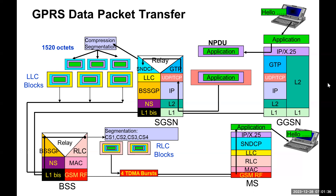NPDUs will be addressed to a particular IMSI or IP address. These NPDUs will be passed over to GTP, which will add a GTP header. GTP is the GPRS Tunneling Protocol, which adds a header that informs the receiving end whether this is a GTP message or an NPDU, along with a tunneling identifier pointing to the MM (Mobility Management) and PDP contexts using the NSAPI. These are some key terminologies used in the GPRS call flow.